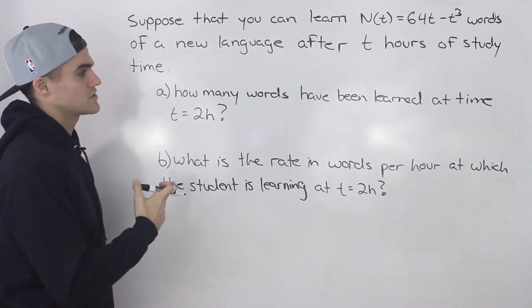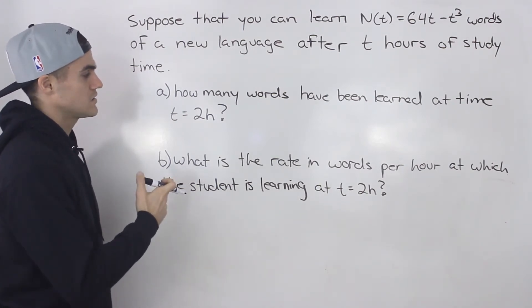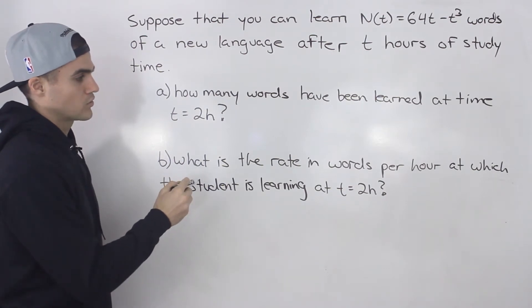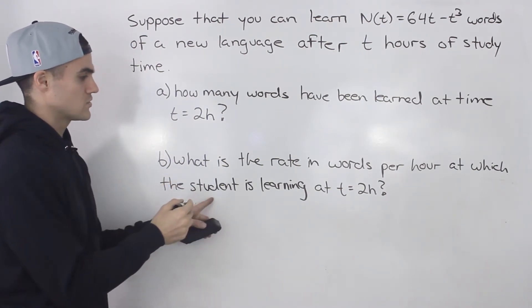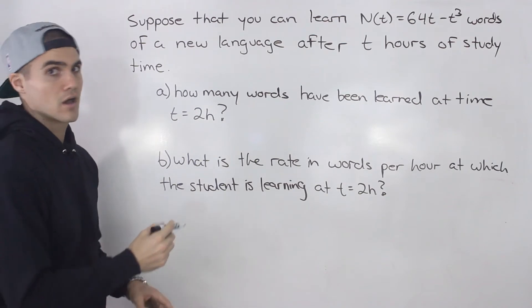Two parts to this question. How many words have been learned at time t equals two hours? And then what is the rate in words per hour at which the student is learning at a time of two hours?